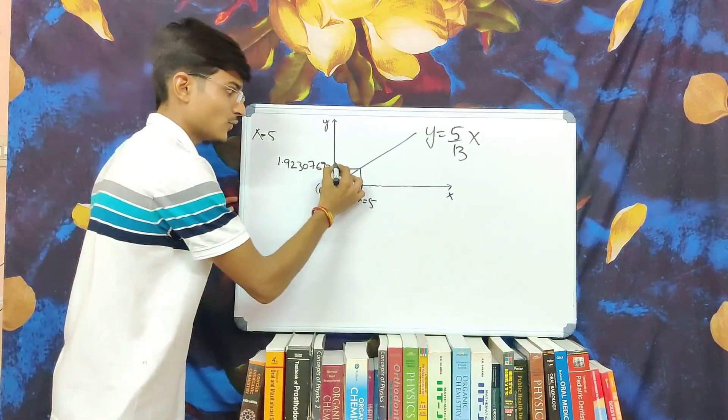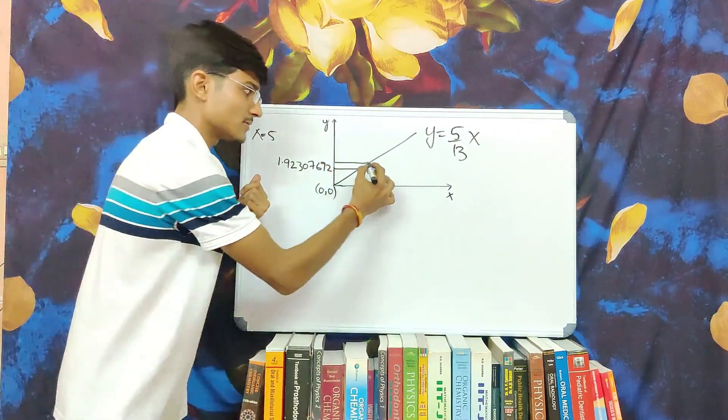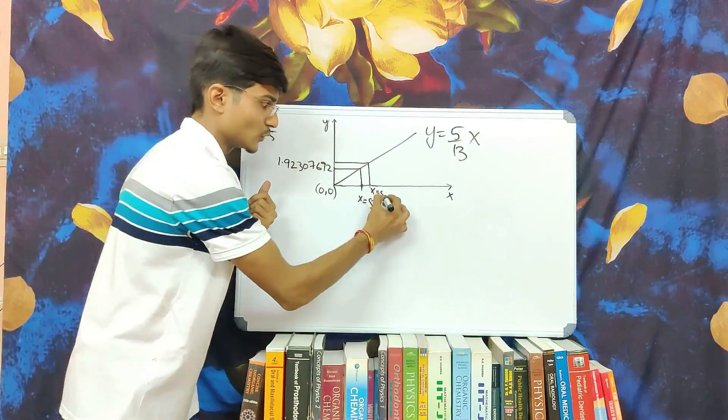Similarly, at y equal to 2, we should get x equal to 5 but what we get is x equal to 5.2.